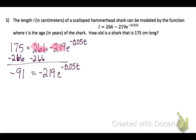So now to get rid of the negative 219 we're going to have to divide both sides by negative 219 and I'm going to round this answer to 0.416.